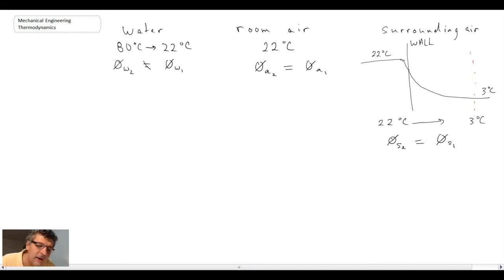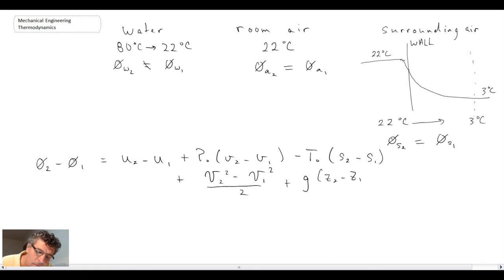And so, with that, what we can do is we can rewrite phi 2 minus phi 1 or we can express it in the following manner. And some of these terms we can neglect. First of all, the specific volume is not going to change. There's no kinetic and there's no potential energy.